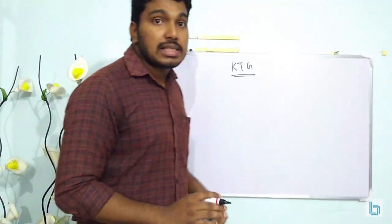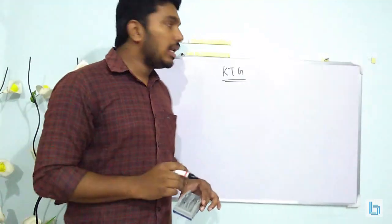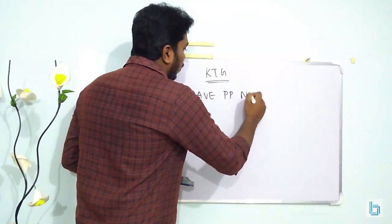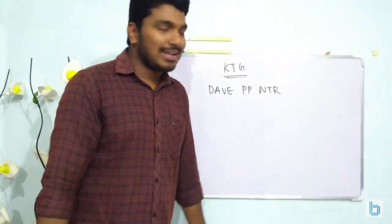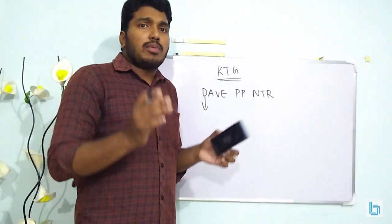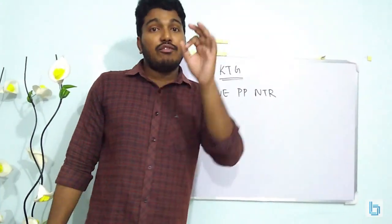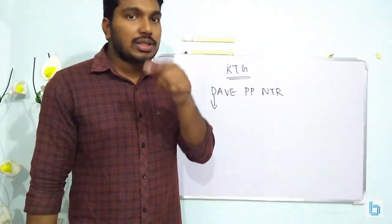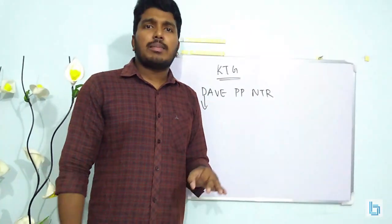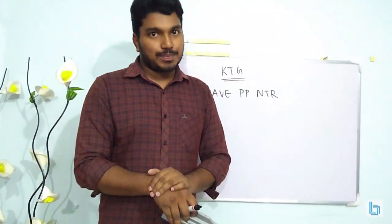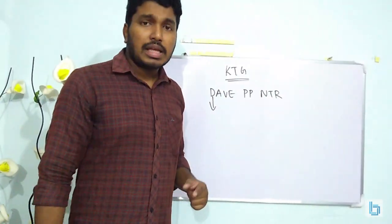Before moving into kinetic theory in detail, we need some basic assumptions. There are a lot of assumptions, so here is a shortcut: remember the word DAVE PP NTR. D corresponds to density — when you take a gas molecule inside a container, the density will be constant at every point inside the container. A indicates attraction and repulsion — the attractive or repulsive forces among gas molecules is minimum.